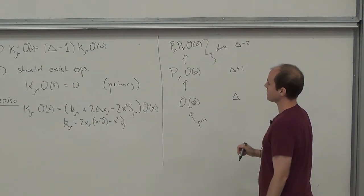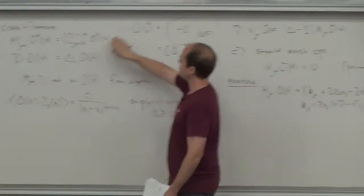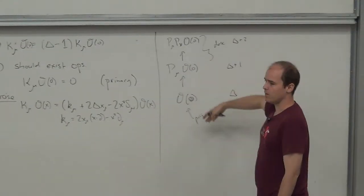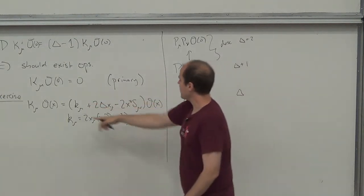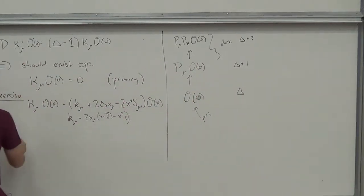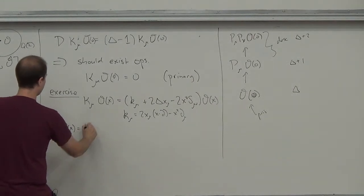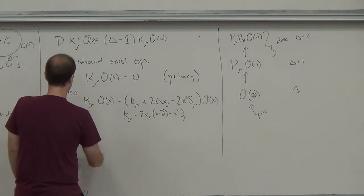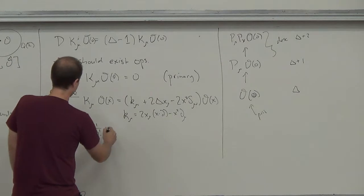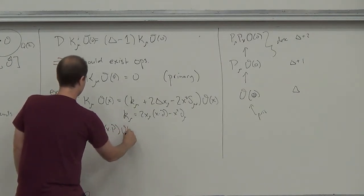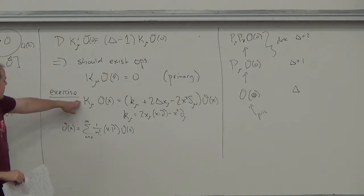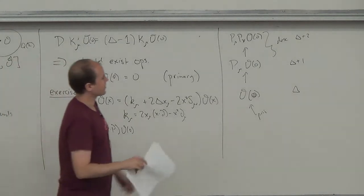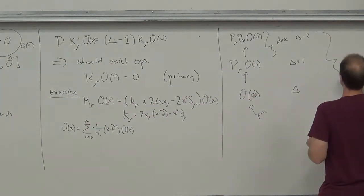Once we have the primary condition and the transformation conditions, we can compute how all the generators act on all possible states. An equation like O(x) packages this information, since O(x) equals an infinite sum of primaries and descendants — it comes from exponentiating e^{x·P}. By expanding in x, we can read off an infinite number of pieces of information about how K_mu acts on the different descendant states. Together, all of this is a conformal multiplet.